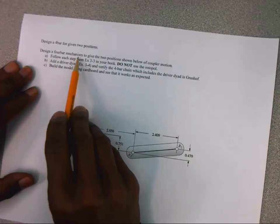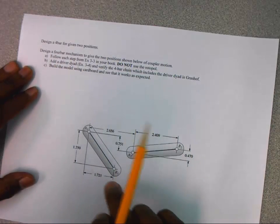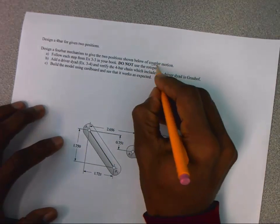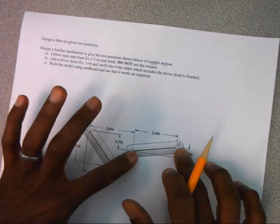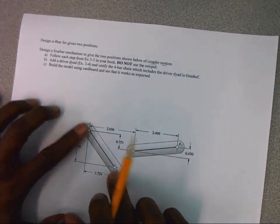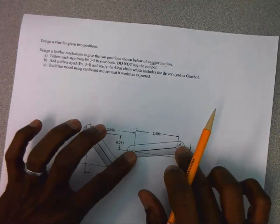We're asked to design a four-bar mechanism to give the two positions shown below of coupler motion. So this is coupler motion. This is the coupler link that we're seeing here. This is the coupler at position 1 or time 1 and the coupler at time 2.